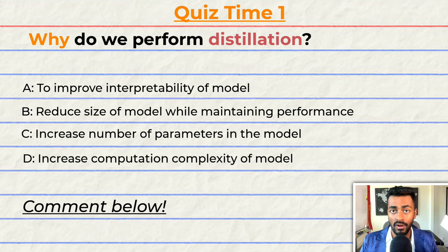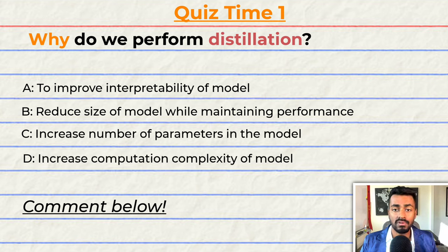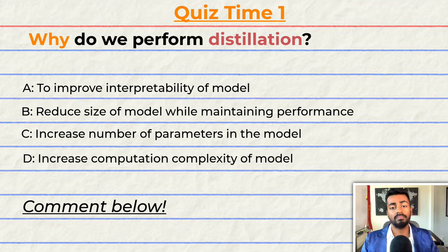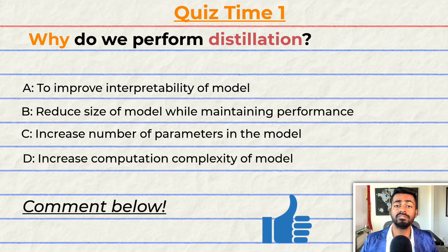Quiz time! Have you been paying attention? Why do we perform distillation? A: to improve the interpretability of the model. B: to reduce the size of the model while maintaining performance. C: to increase the number of parameters in the model. Or D: to increase the computational complexity of the model. Comment your answer down below and let's have a discussion. If you think I deserve it, please consider giving this video a like because it will help me out a lot.